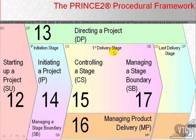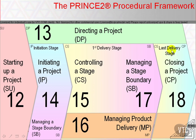It may be that the first specialist stage is also the last, but even if it is not, there will always be a last specialist stage. Again, its internal structure will use the controlling a stage and managing product delivery processes to conduct the specialist or technical work. The last specialist delivery stage will end with four of the five activities of closing a project. Closing a project and managing stage boundaries are very similar — they bring stages to a close, either as planned or prematurely, and they prepare for whatever is next.